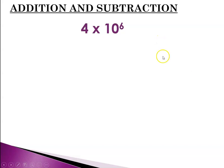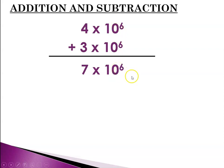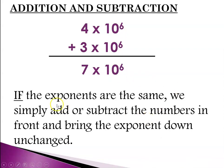So if we have 4 times 10 to the 6, which is 4 million, plus 3 times 10 to the 6, which is 3 million, and you'll notice they have the same magnitude, their exponent is the same, then we can just add them up: 4 plus 3 is 7, and carry down that same power of 10. So if the exponents are the same, we simply add or subtract the numbers in front and bring that exponent down, and that's because they have the same magnitude.